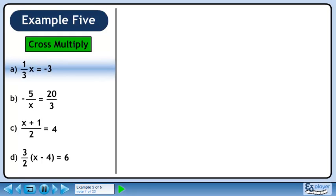All of the questions in this example can be solved using cross multiplication. In part a, we have 1 over 3x equals minus 3.